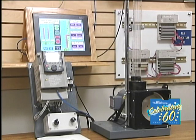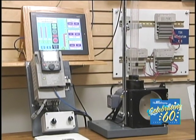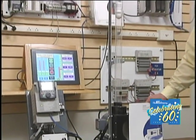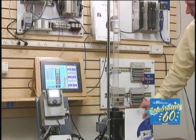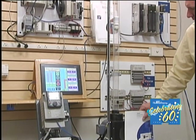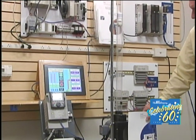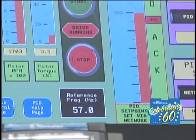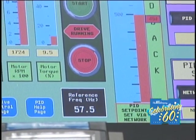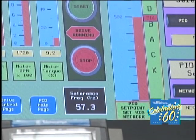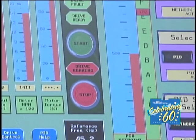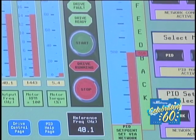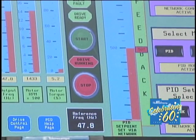Now we're demonstrating how a PI controller can compensate for a change in airflow. I'll place my hand over the fan. If you're able to see the screen, you can see that the drive is now running faster to make up for the loss of airflow. Now we'll abruptly pull that away. It's kind of an extreme situation, but the PI controller caught that — which it should do.